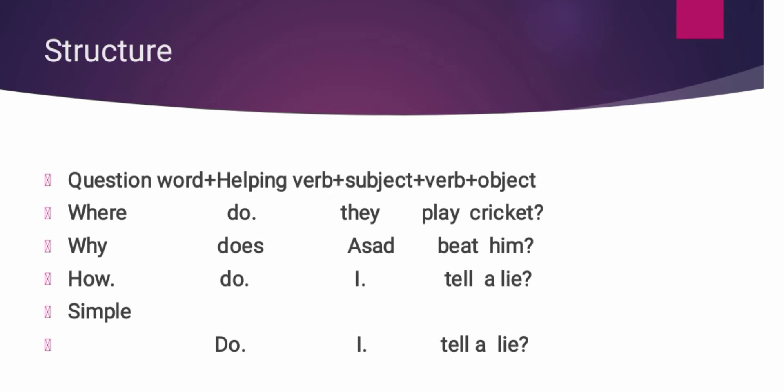Now we see the structure of double interrogative sentences of present indefinite tense. इसका structure कुछ इस तरहां से होगा: First is question word, plus helping verb, plus subject, plus verb, plus object. सबसे पहले हम question word use करते हैं, question word के after helping verb, helping verb के after subject, subject के बाद verb, और verb के बाद object इस्तमाल किया जाता है.